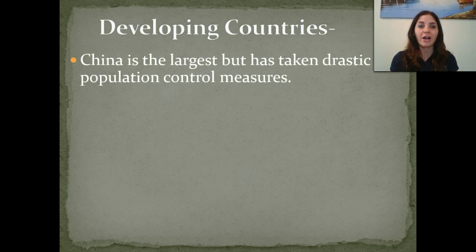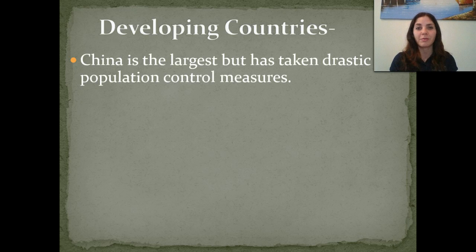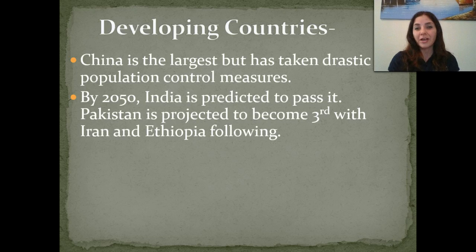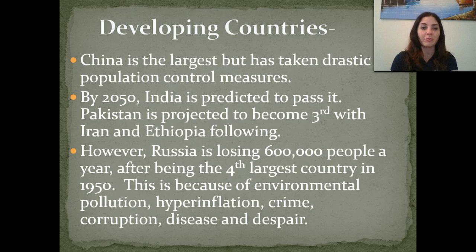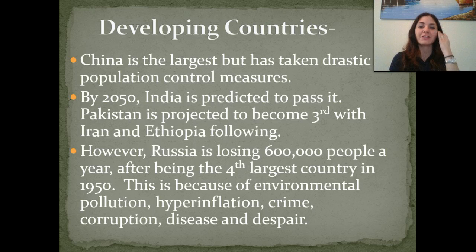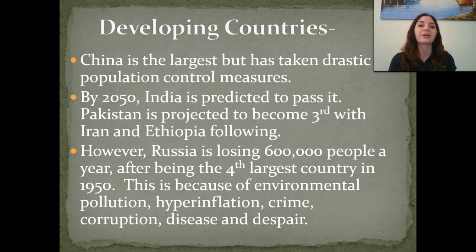The largest developing country currently is China. However, in recent years — basically about the last 40 years — China has taken drastic measures to decrease its population. The second largest country is India, and we actually think that India is going to surpass China in population growth by the year 2050. We also have Pakistan, as well as Iran and Ethiopia, that are also huge developing countries contributing to the world population. Russia used to be one of the big players, but because of really bad environmental factors, hyperinflation, crime, corruption, disease, and despair, up to 600,000 people per year are emigrating out of Russia into other countries, so it's not going to be one of the big contributors anymore.